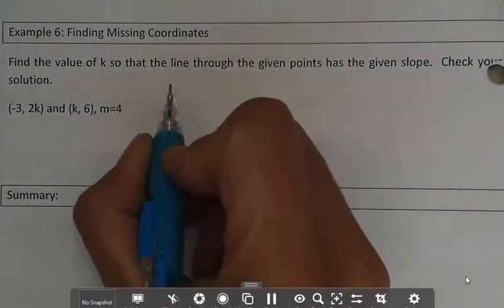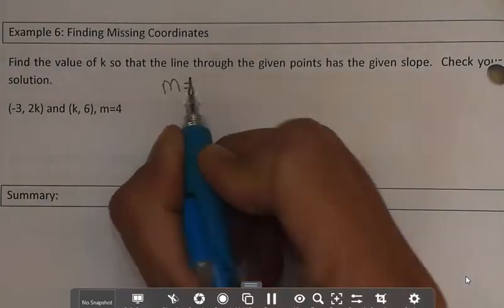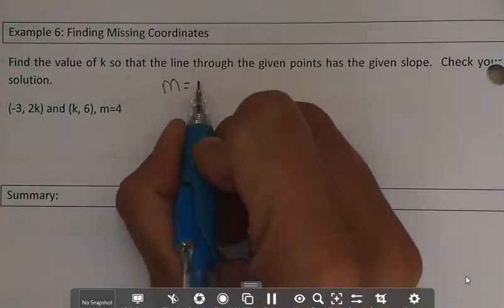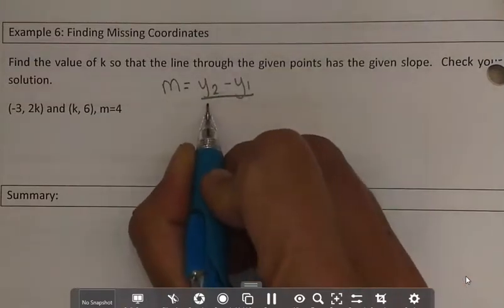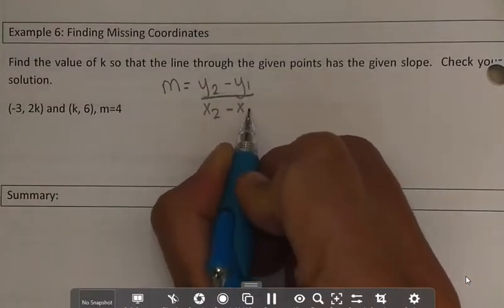So we are given the slope. We know that slope, the way that you find slope is you take y2 minus y1, or the rise, and you divide that by x2 minus x1, or the run.